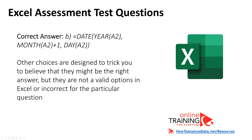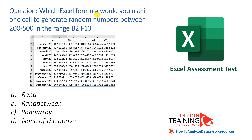Which Excel formula would you use in one cell to generate random numbers between 200 and 500 in the range B2 to F13? A sample shows values with decimal points populating the predefined range. The four choices are: RAND, RANDBETWEEN, RANDARRAY — all three are valid Excel functions — and choice D, none of the above.